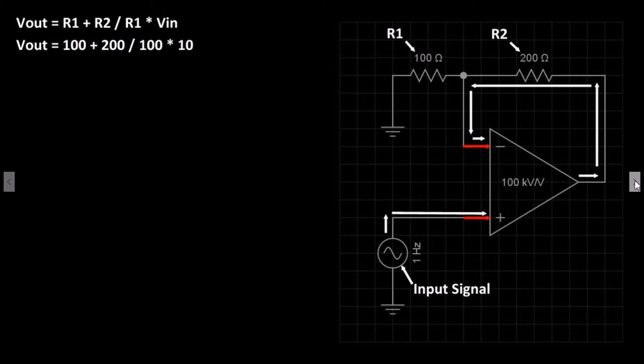100 plus 200 equals 300, 300 divided by 100 equals 3, 3 multiplied by 10 equals 30. So the output voltage for this circuit will be 30 volts peak-to-peak.